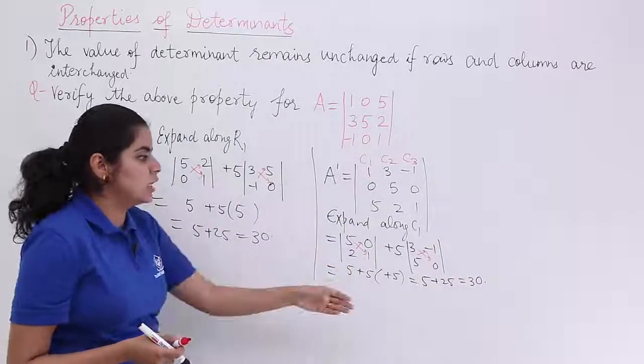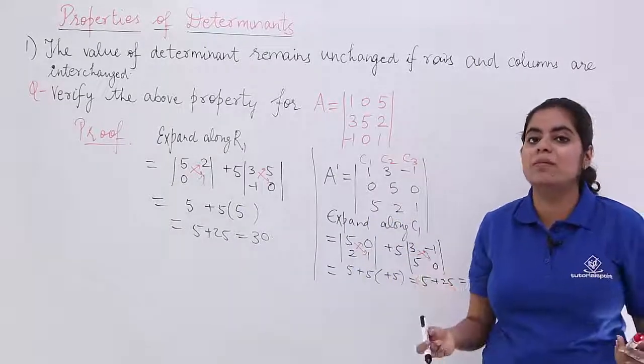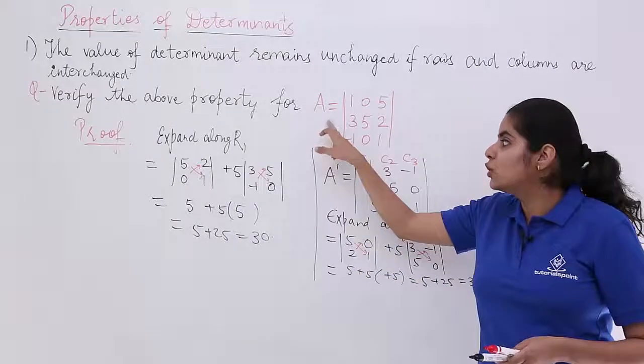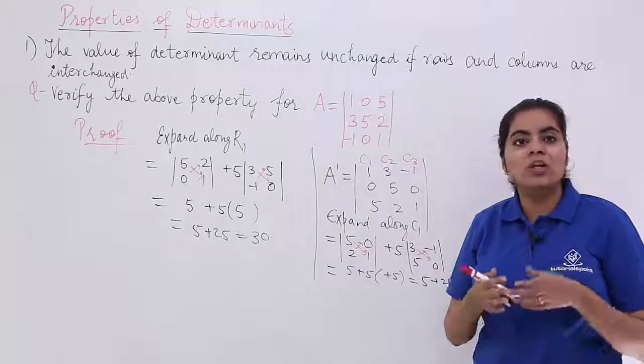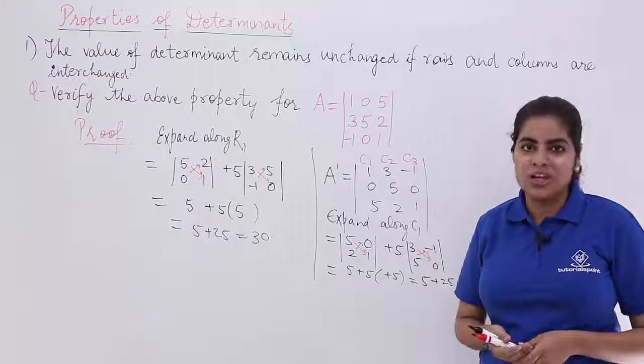Now see the values: 30 here, 30 here. That means the values are same. If you have 2 determinants and those 2 determinants are such that only the rows and columns are interchanged, the values don't change at all.